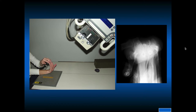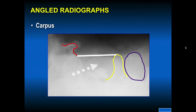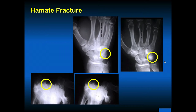This is a normal x-ray carpal tunnel view. These angled views show the hook of the hamate. This is an example of a hamate fracture — you can see this best on the carpal tunnel view. You get a suggestion of a hamate fracture on the standard view, but it's best seen on the carpal tunnel view.